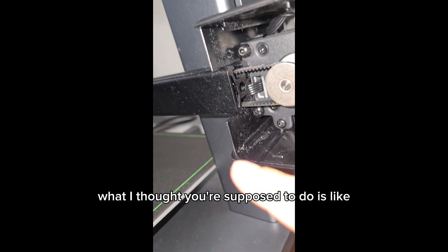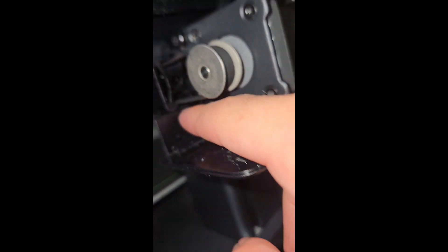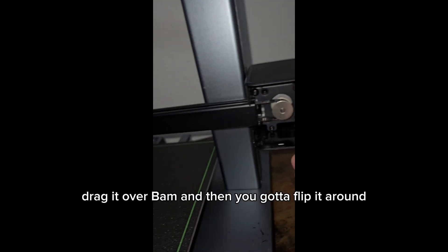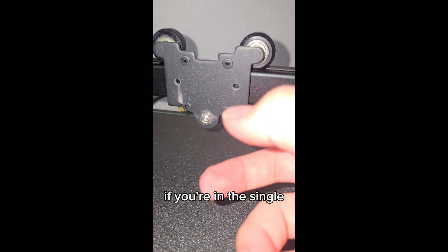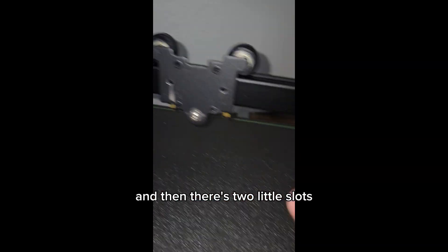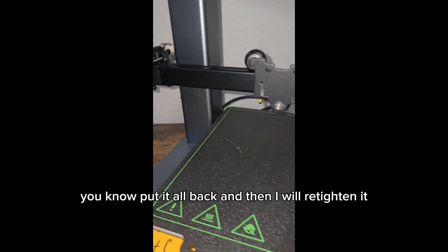What I thought you're supposed to do is like kind of get the edge and drag it through there and then bring it over there. But there's actually, you can just push it through that hole, drag it over, bam. And then you got to flip it around if you're in this angle. And then there's two little slots, put them on there and then you're pretty much done. And then of course, you know, put it all back and then I will retighten it.